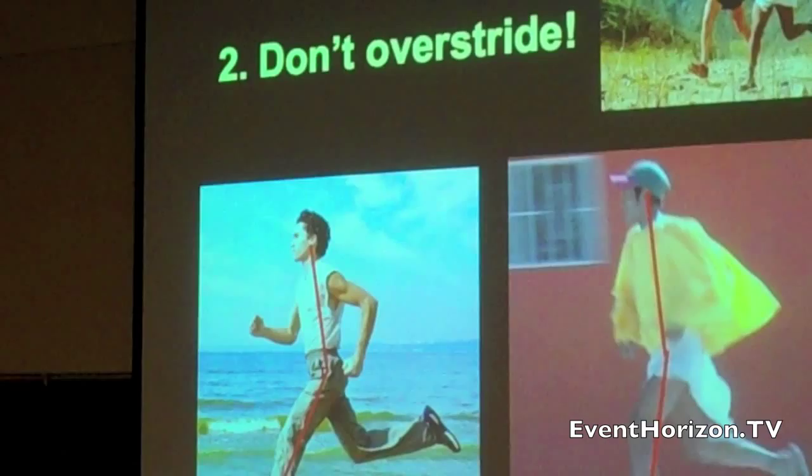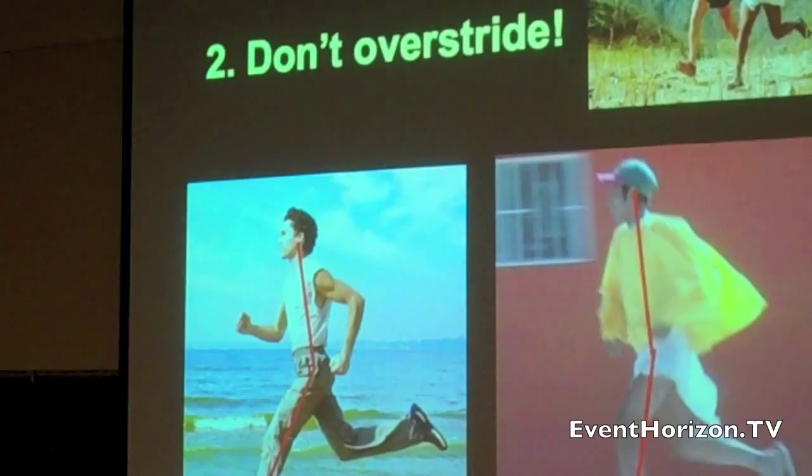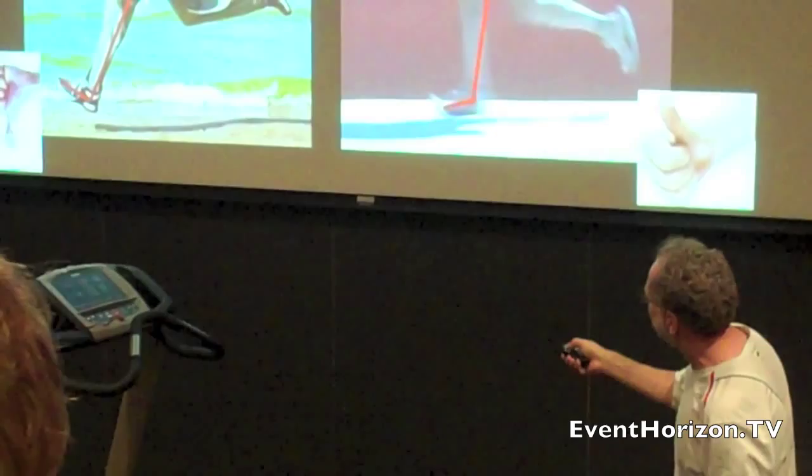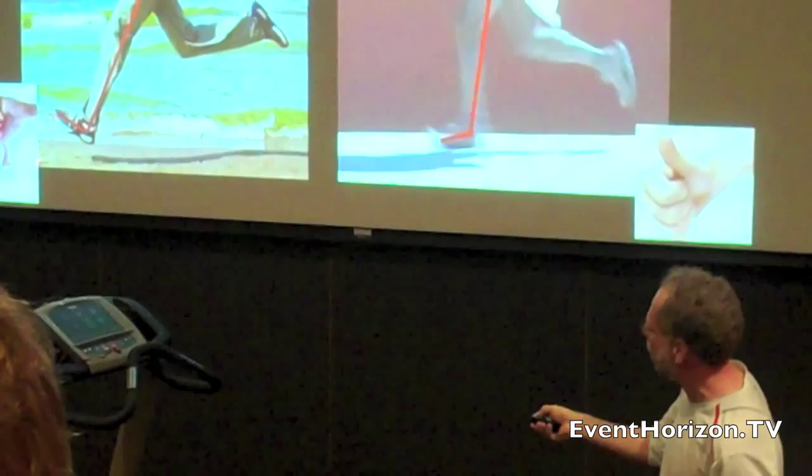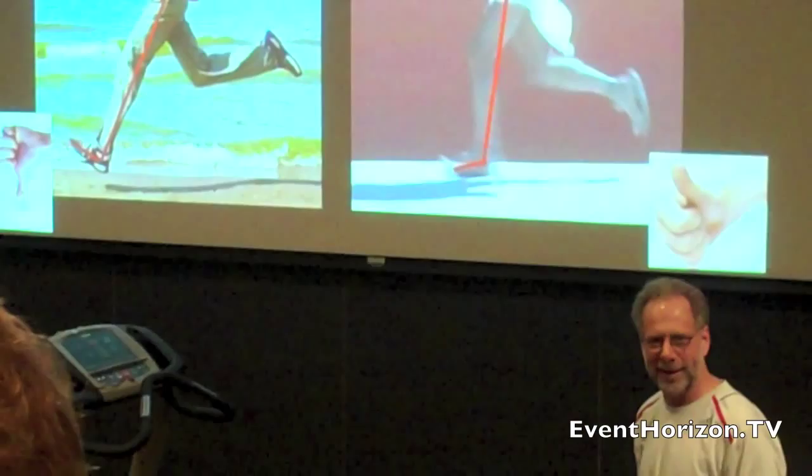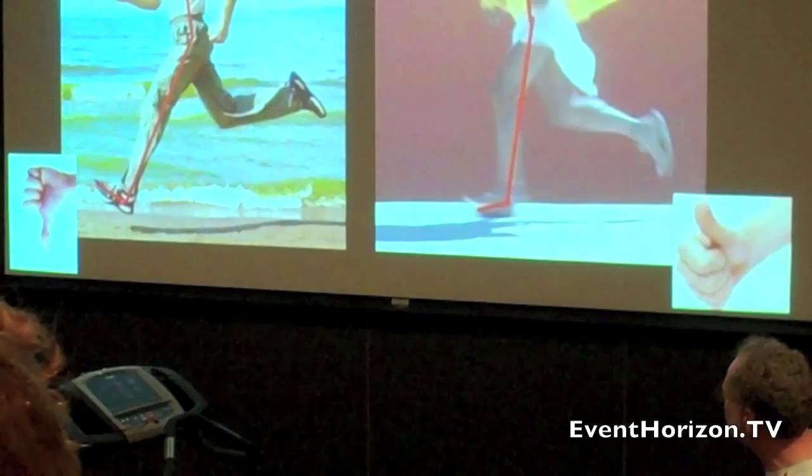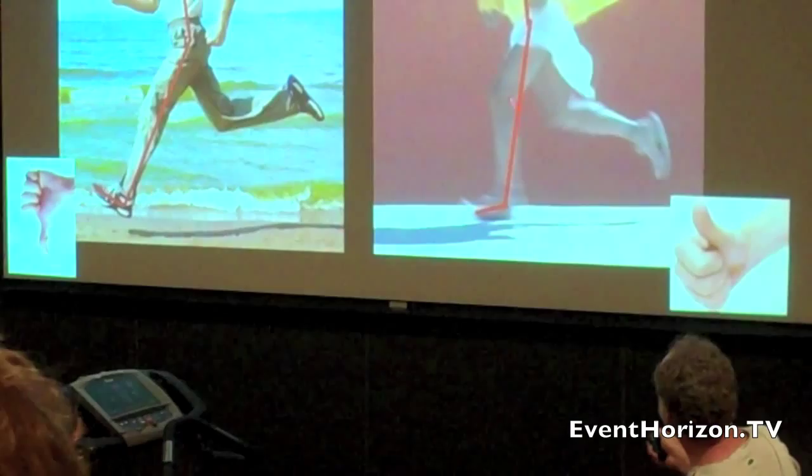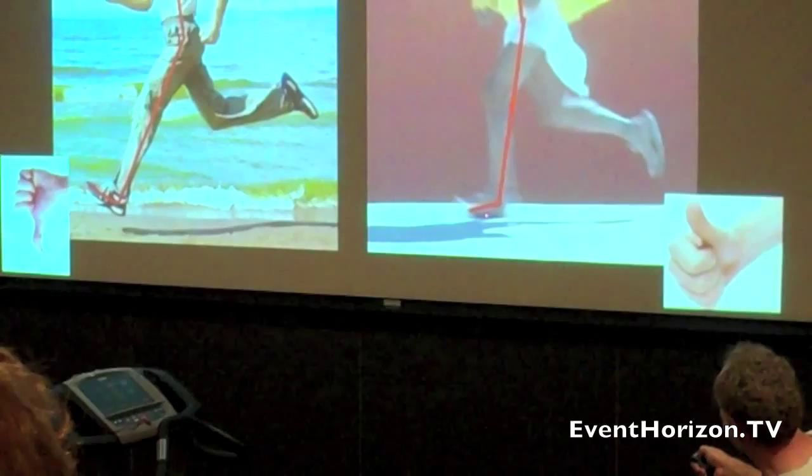Look how long his foot is. It's way out in front of the center of gravity. That is causing one massive heel strike. Unfortunately, he's running on a beach, so he's got lots of cushioning down there, so he might get away with it for a little bit. But if you were to do that barefoot, it would not be pleasant. So that's an overstride. Almost every running coach on the planet agrees that you shouldn't overstride.